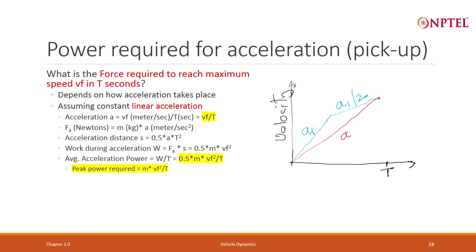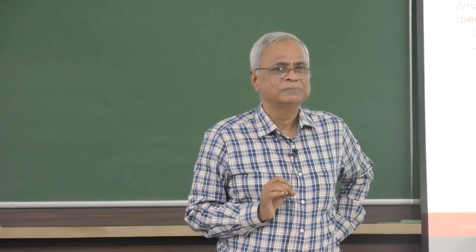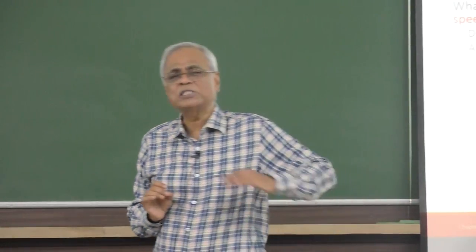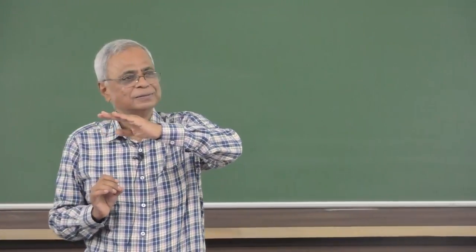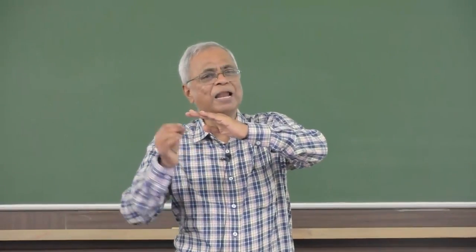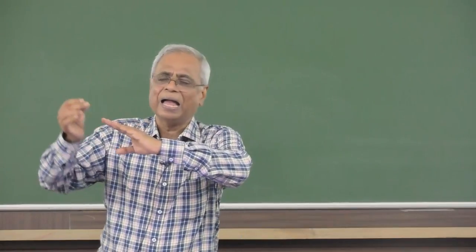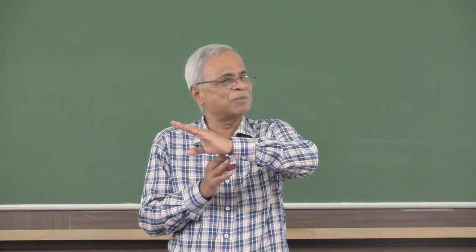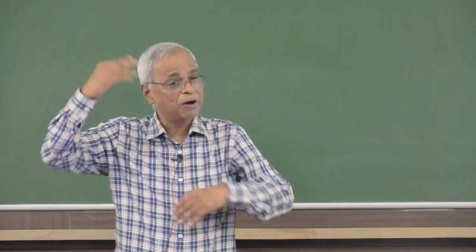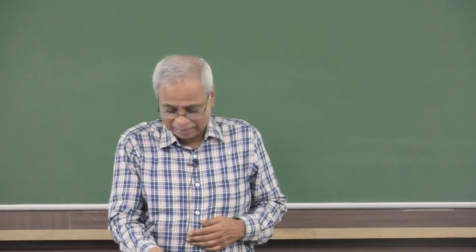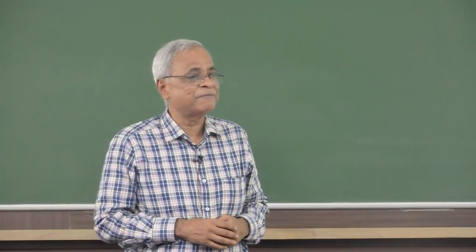So what we often ask is: do I really need to accelerate linearly? Because power requirement always has an extra V term. Force may be constant, but power has a V component. In the beginning, my power requirement is small; in the end, my power requirement is very large. That is the reason the peak power requirement is mv²f by t.